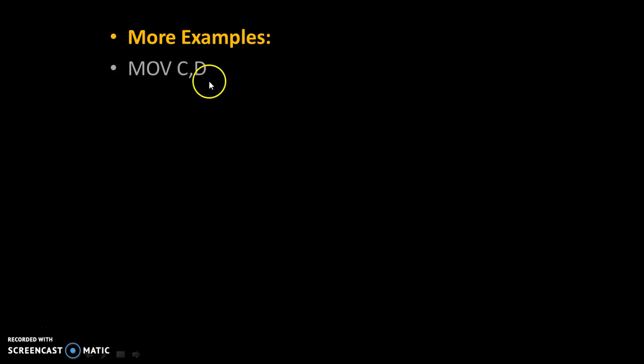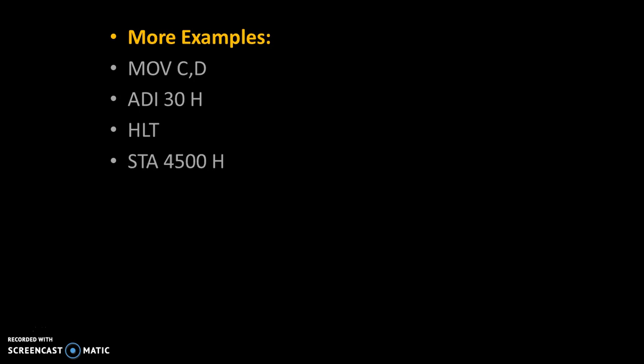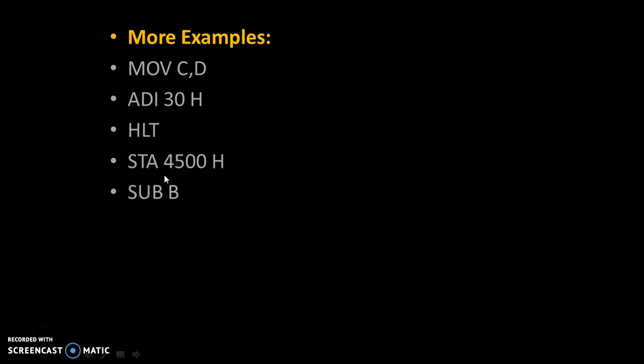More examples: MOV C,D — no number is given, so it is a 1-byte instruction. ADI 30H — 30 is a 2-digit number, so it is a 2-byte instruction. HLT — again no number is given, so it is a 1-byte instruction. STA 4500H — 4500 is a 4-digit number, therefore it is a 3-byte instruction.